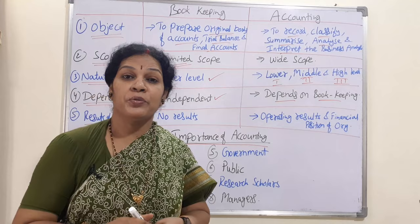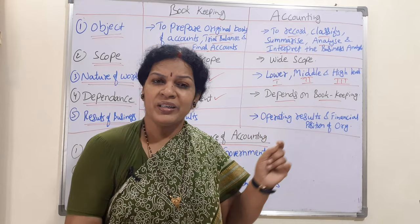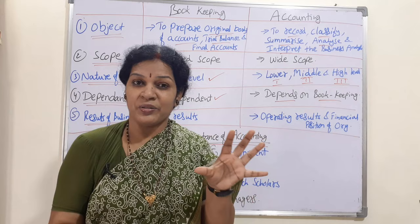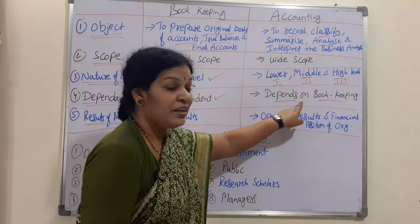Accounting, however, depends on bookkeeping. Once bookkeeping is over, accounts will start — they get their base from bookkeeping. The journal entries, classified data, trial balance, and final accounts are all prepared in bookkeeping first. Once this is over, with this data we prepare the accounts. That is why we say accounting depends on bookkeeping.